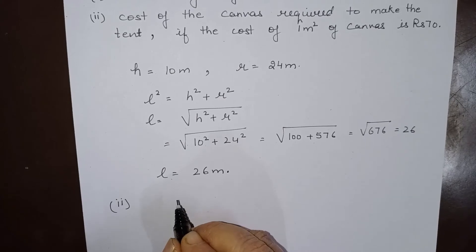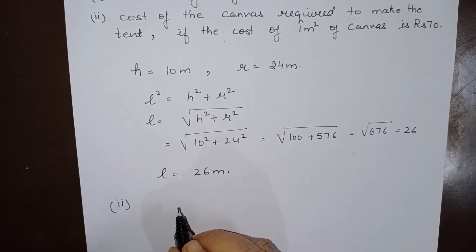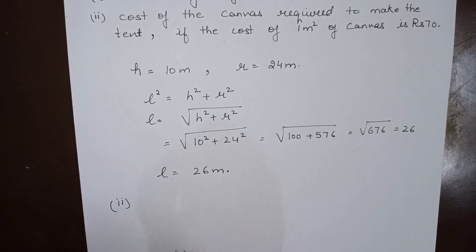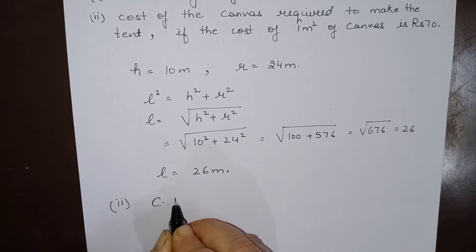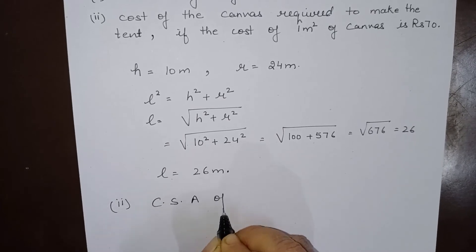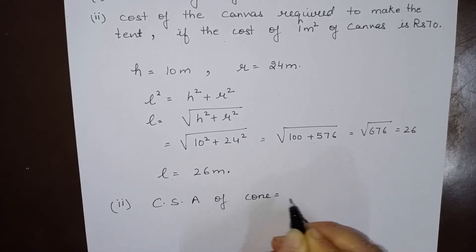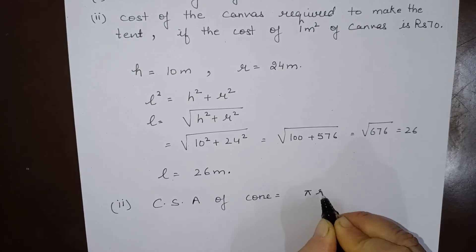Now to first find the cost of the canvas, we have to find the curved surface area of the canvas used to make the tent. So curved surface area of cone we have to find first, which is pi r l.